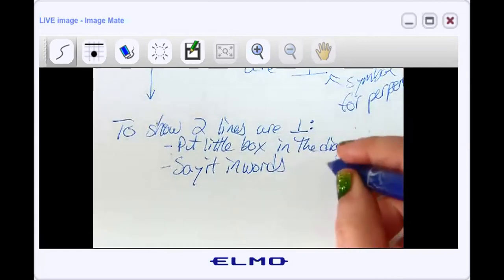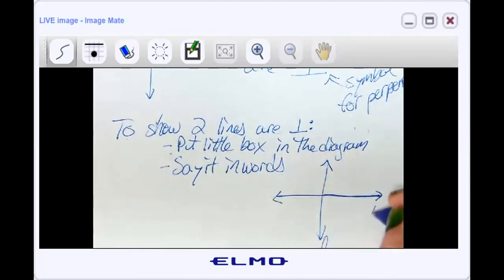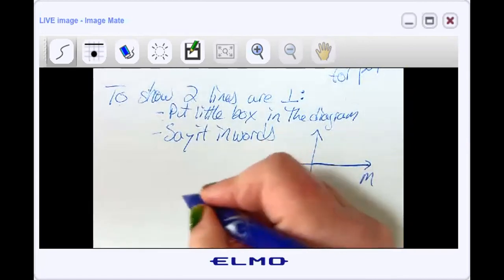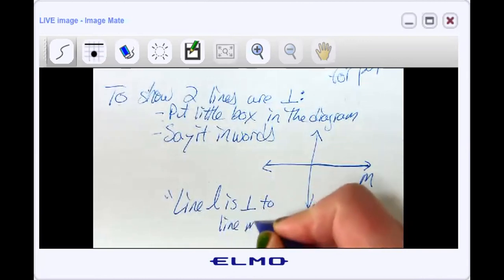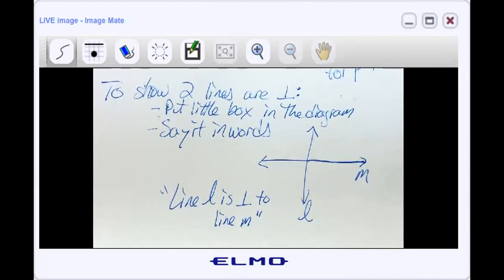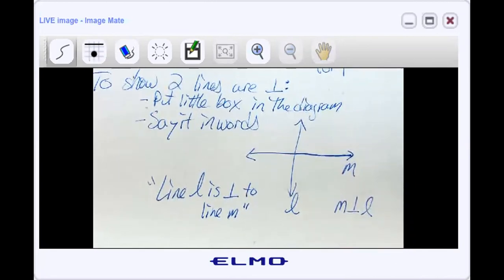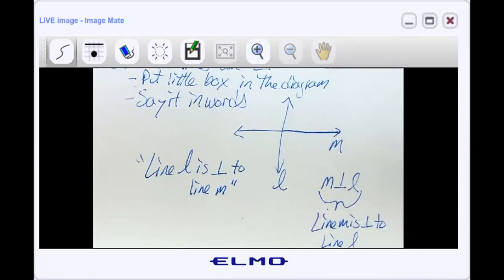So let me show you what that might look like. You might have two lines and they might look perpendicular. But you don't know that they are until, let's say this is line L and this is line M. So in the directions, they may state line L is perpendicular to line M. So you might see something like that in the directions. Another shortcut that is sometimes taken, instead of writing it all out like that, they might just put over in the corner something like this.